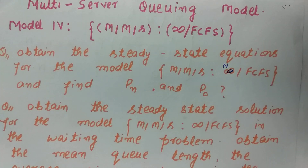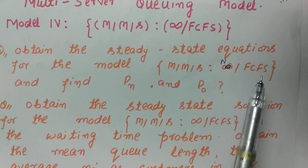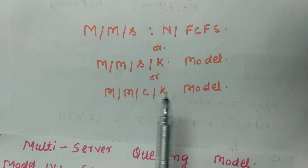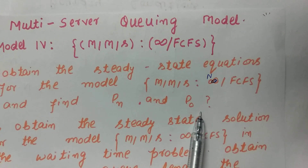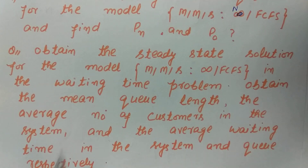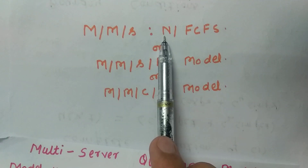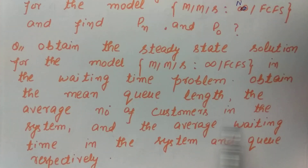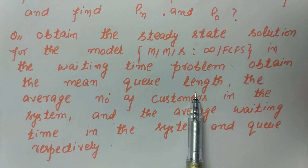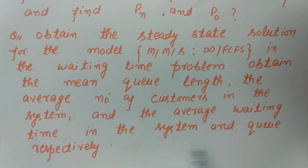First of all I will discuss what type of questions are being asked in the examination related to this model: obtain steady-state equations for model M/M/S with FCFS discipline, also called the M/M/S/K or M/M/C/K model, and find the mean queue length, average number of customers in the system, and the average waiting time in the system and in the queue respectively.